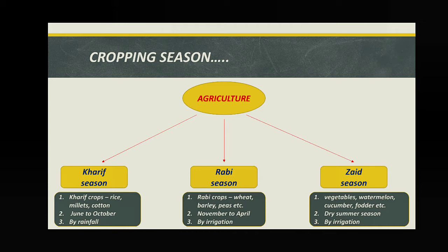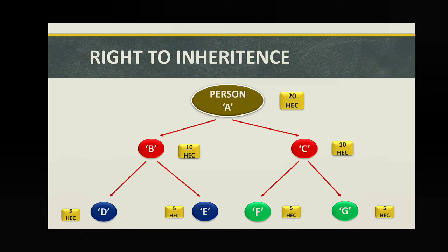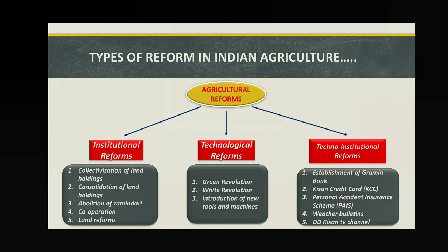We also discussed cropping seasons, the right to inheritance — how agricultural land ownership passes to successors, causing landholdings in India to become smaller and smaller, creating problems. We discussed how to improve the Indian agricultural system, why farmers are committing suicide, and why the present generation does not want to become farmers. We covered government institutional, technological, and techno-institutional reforms.